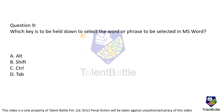Which key must be held down to select a word or phrase in MS Word? You can utilize arrow keys, but simultaneously you need to use the Shift key. With Shift plus an arrow key you can select words in the upward or downward direction. So for selection, Shift is the key utilized, and option B is the correct answer.